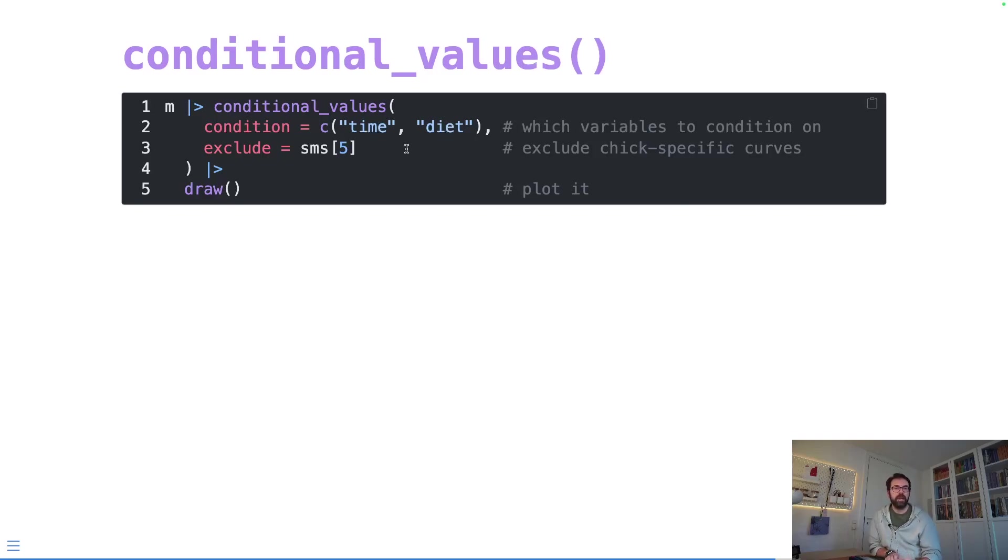And as before, we are going to exclude the chick-specific growth curve, so we remove that effect when we're visualizing. So we're only looking at the average diet effect over time. Then the conditional_values actually returns a tibble—a data frame that we can do whatever we might want with it.